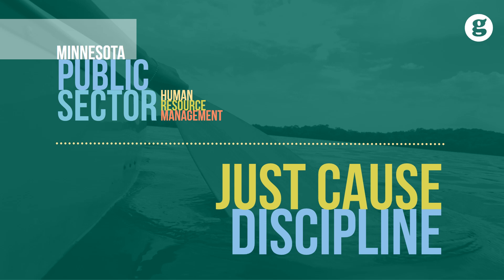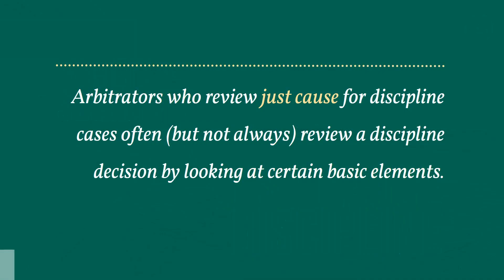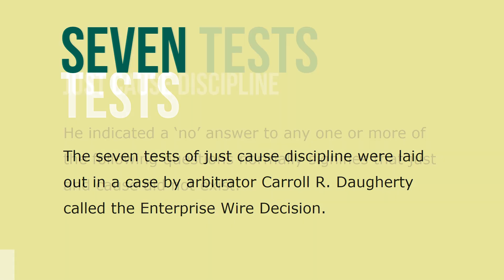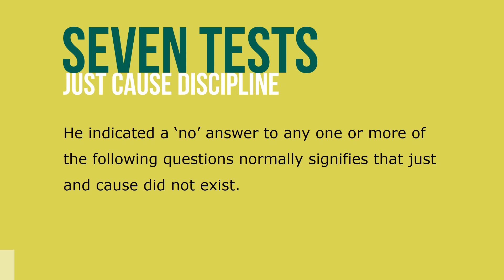In this presentation, we'll take a look at the commonly held model for just cause discipline. Arbitrators who review just cause for discipline cases often, but not always, review a discipline decision by looking at certain basic elements. The seven tests of just cause discipline were most notably laid out in a case written by Arbitrator Carroll Dougherty called the Enterprise Wire decision. Arbitrator Dougherty called it the common law definition of just cause. He indicated that a no answer to any one or more of the following questions normally signifies that just and proper cause did not exist.